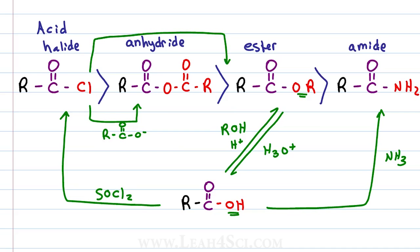If I react the acid halide with an alcohol which gives us the OR portion, I'll get an ester. And if I react the acid halide with ammonia or an amine, I will get an amide.